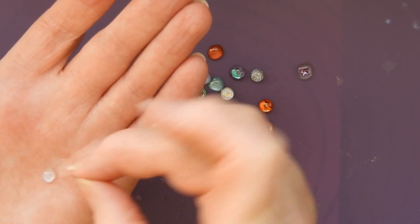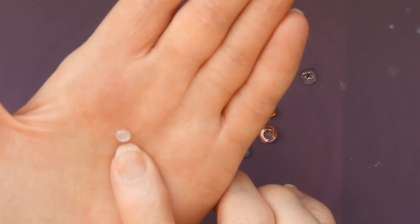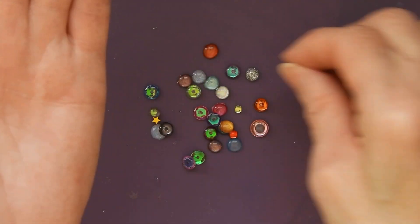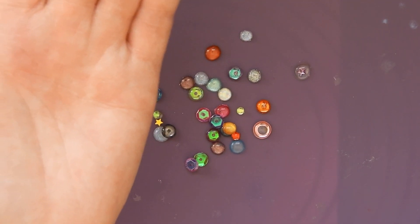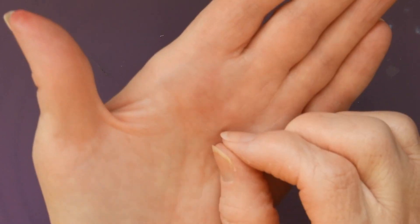And this is one that I did with some pearlized eyeshadow. It's very subtle, but it's still very pretty. You can also do little mica dots.